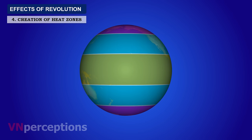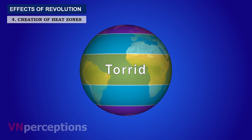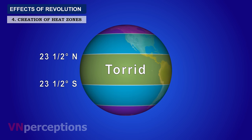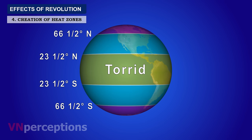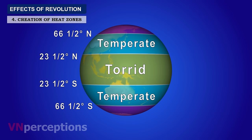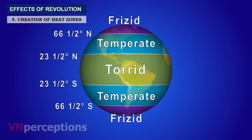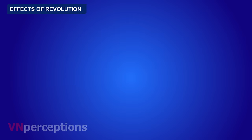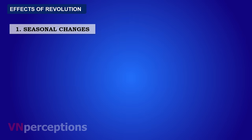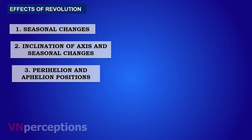The next effect of revolution is the creation of heat zones. The entire earth can be divided into heat zones: the torrid zone, lying between 23.5 degrees north and 23.5 degrees south; the temperate zone, from 23.5 degrees to 66.5 degrees north and south; and beyond 66.5 degrees in the north and south, the frigid zone. To sum up the effects of revolution: seasonal changes, inclination of axis and seasonal changes, perihelion and aphelion positions, and creation of heat zones.